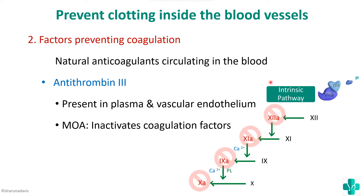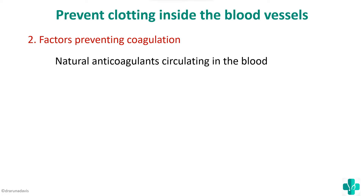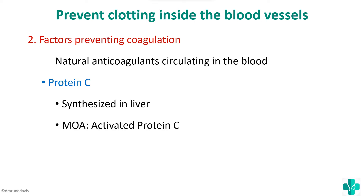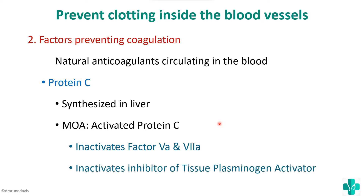Antithrombin-3 works alongside heparin. The third natural anticoagulant is protein C, which is synthesized in the liver. Activated protein C inactivates factor 5 and factor 7. It also inactivates the inhibitor of tissue plasminogen activator — this is a crucial step in activating plasmin, which breaks down fibrin.